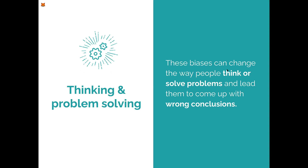The second category — the blue one, and we also have small icons for colorblind users — is thinking and problem solving. These are the biases that change the way people think and draw them to get wrong conclusions.